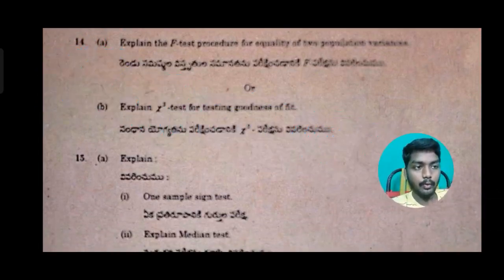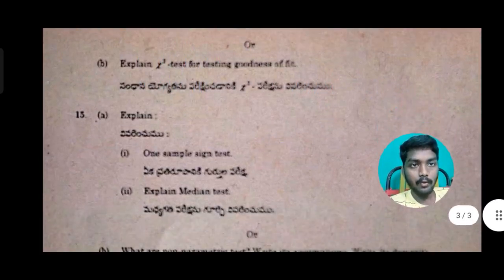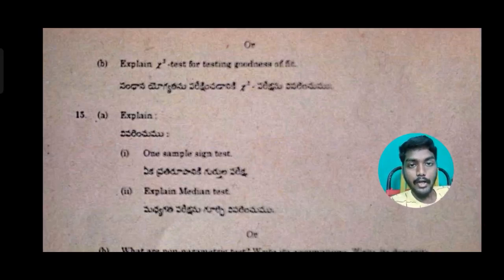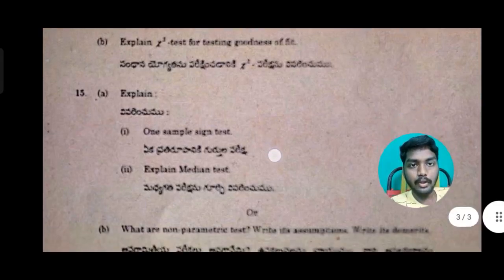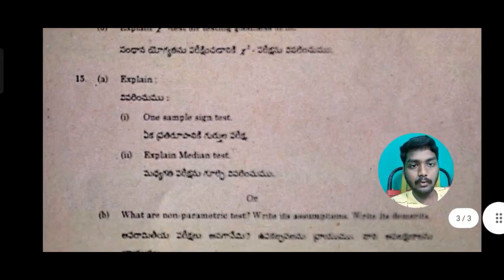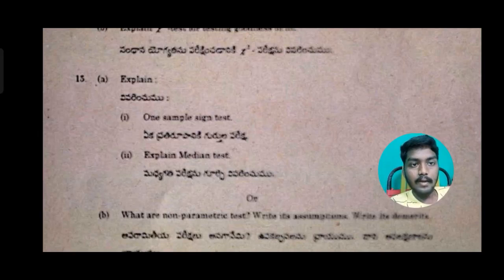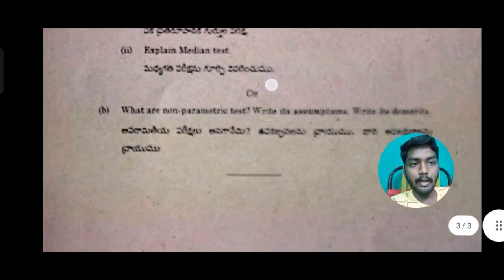In 2021, we will try to test this as well. The 15th question is the chi-square test for testing goodness of fit. If you use this question, you can explain two topics: the first one is the one-sample sign test, and the second is the median test. This is 10 marks.